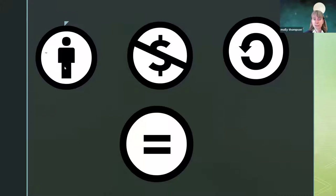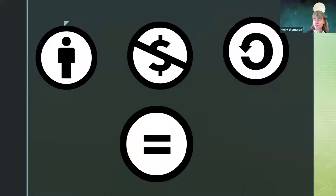So you always do that with the BY license. The next one is the dollar sign with a line through it — you can probably guess what that means. Basically, it means non-commercial. If I take Drew's photo of the Quebec Plaza and decide I want to put it on a t-shirt and sell it, I cannot do that. I cannot make money off of his creation. Even if I work for a nonprofit and want to sell it for a good cause, I still can't — if he has that non-commercial license on it, money cannot be made off of it.